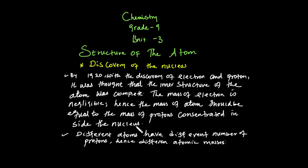The mass of an atom should be concentrated in the nucleus. The different atoms have different numbers of protons. For instance, the proton number of sodium is 11, and the proton number of hydrogen is 1.